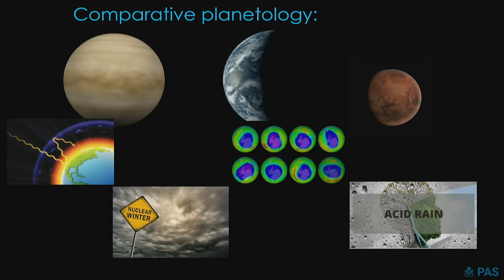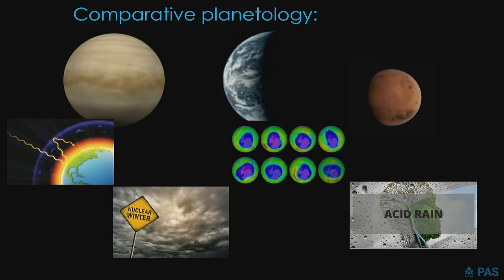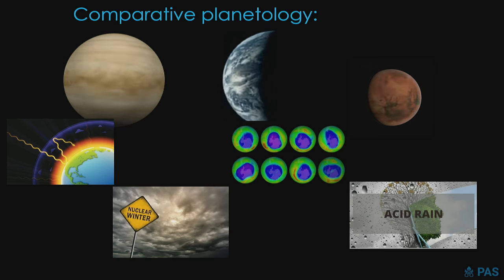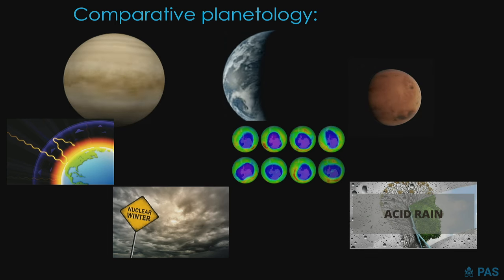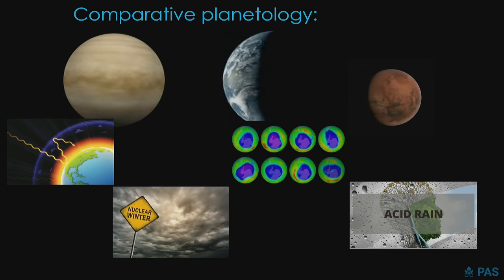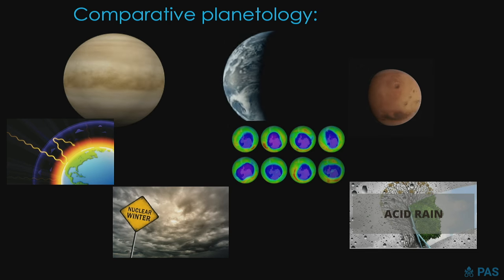Comparative planetology has also taught us a lot about atmospheric and other processes that have helped us understand some of the environmental challenges we face on Earth today. My actual scientific published research is very involved in climate modeling, but most of my climate modeling is on other planets. Of course, we use the techniques and models from Earth science and modify them in different ways.